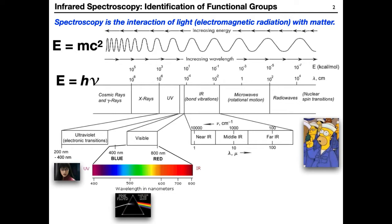We're familiar with the colors of the rainbow: ROYGBIV — red, orange, yellow, green, blue, indigo, violet. In infrared — infra meaning before red — this region of the electromagnetic spectrum has wavelengths with sufficient energy to cause bond vibrations. What we're considering is how that energy of light interacts with a bond dipole. Bond dipoles arise from differences in electronegativity. When you have a greater difference in electronegativity, the bond dipole is larger, and you'll see more intense signals in the IR.